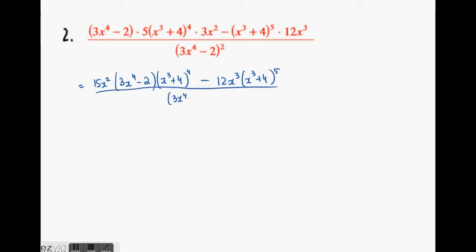Here is my simplified expression. The GCF is going to be 3 with x squared because it's the lowest power, and x power 3 plus 4 with the power of 4 because it's a smaller power out of the ones in the numerator.